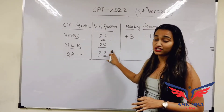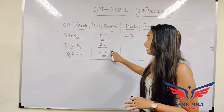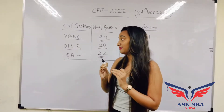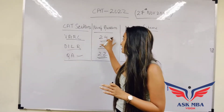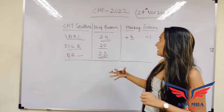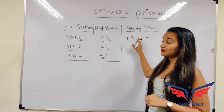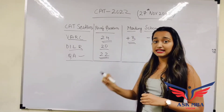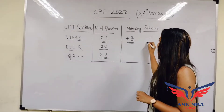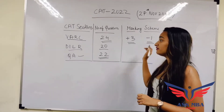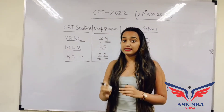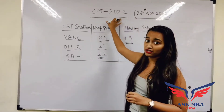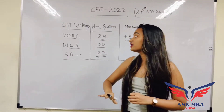These are the overall questions being asked in the exam, which is around 98 questions in total for your CAD examination. Coming towards the marking scheme, it is going to be plus 3 for every correct answer and minus 1 if your answer is incorrect. This is the overall marking scheme, also mentioned on the official website.